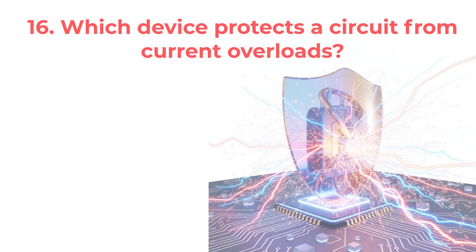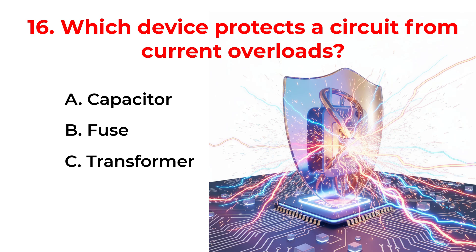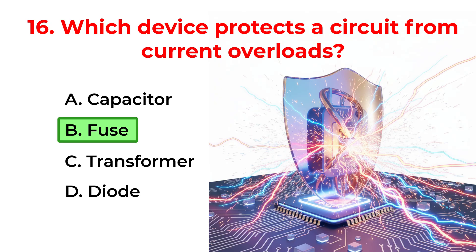Which device protects a circuit from current overloads? A. Capacitor. B. Fuse. C. Transformer. D. Diode. Correct answer is option B. Fuse.